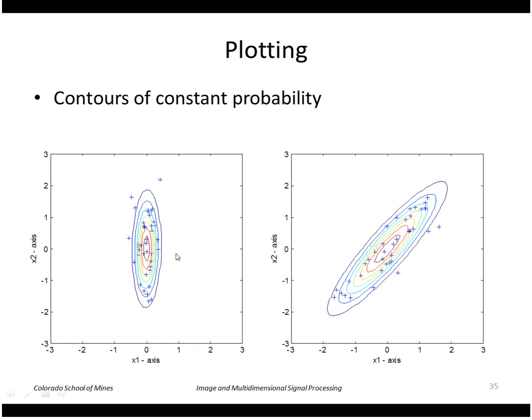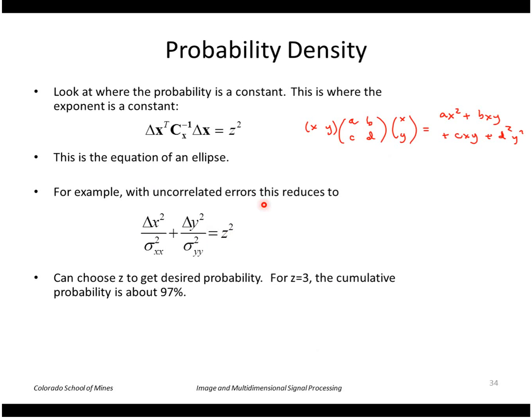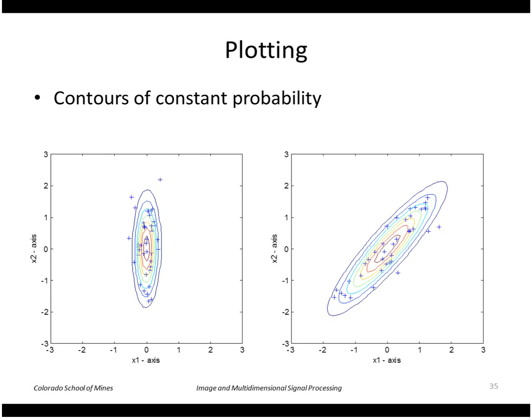We can plot contours of constant probability if we set the exponent to a constant. For example, z equals three would capture about ninety seven percent of the cumulative probability.